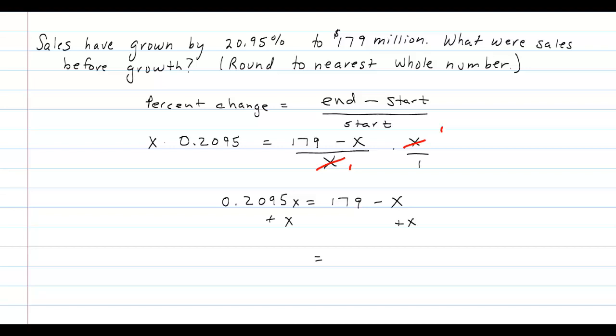So the right hand side of this is simply 179. My left hand side looks like that. What I'm going to do now is factor out that x. When I divide out an x out of 0.2095, I get 0.2095.